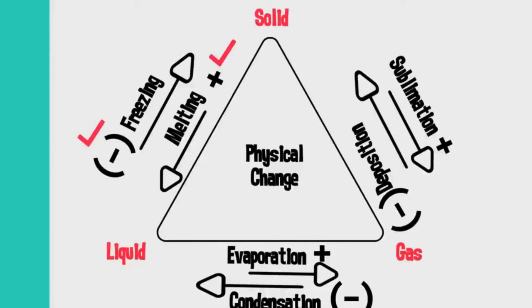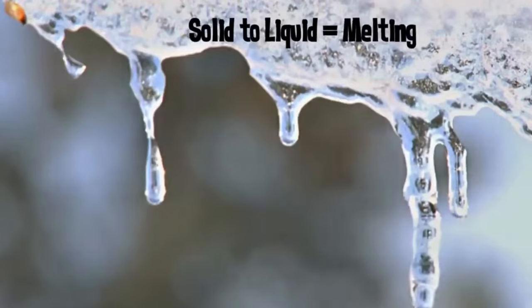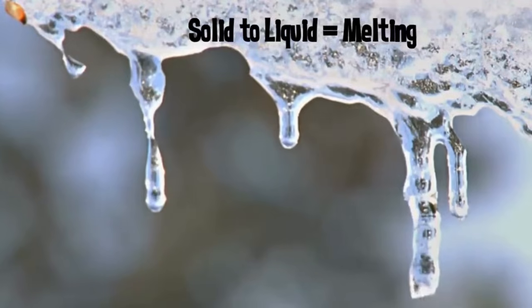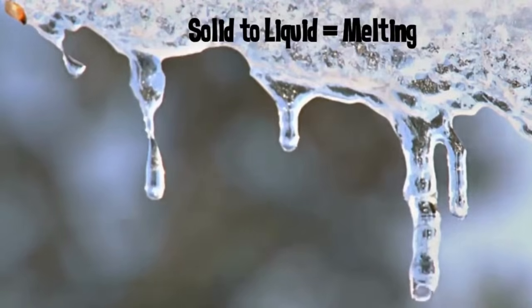Let's first go over the changes that require heat. Melting is when you move from a solid to a liquid. This ice is a solid, but as heat is applied, it is slowly becoming a liquid.